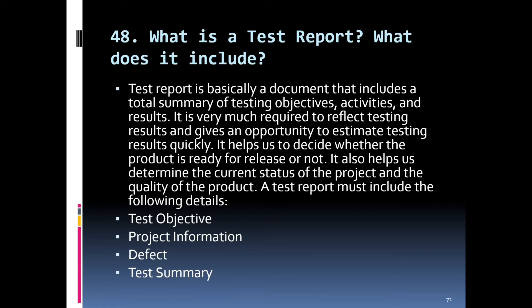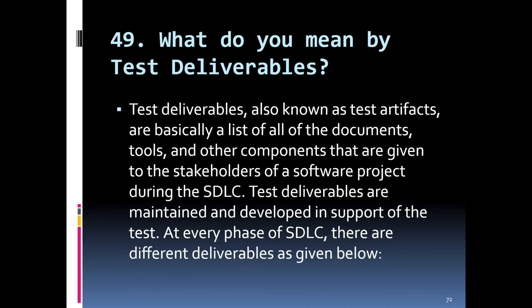What is a test report and what does it include? A test report is a document that includes a total summary of testing objectives, activities, and results. It is required to reflect testing results and allows quick estimation of outcomes. It helps determine whether the product is ready for release and reflects the current status of the project and product quality. A test report must include test objectives, project information, and a defect or test summary.